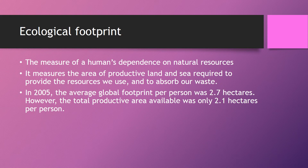Our definition for ecological footprint, which you should have in your glossary, is the measure of a human's dependence on natural resources — how much land and sea you would need to provide all the resources that you use, and also to absorb your waste. In 2005, the average global footprint per person was 2.7 hectares, but we only have about 2.1 hectares per person available, so we're using and wasting more than we can keep up with.